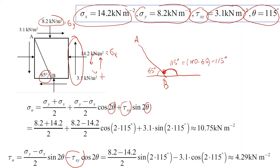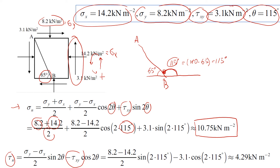Once we know all the variables, we put them into the formula for the normal stress acting on plane A-B. With theta = 115 degrees, we get a normal stress of 10.75 kilonewtons per square meter. Then we calculate the shear stress acting on this plane using the same angle, and we get 3.1 as the answer.